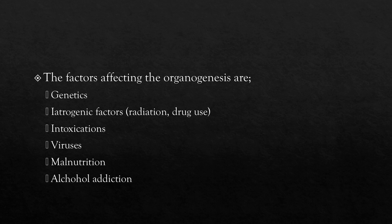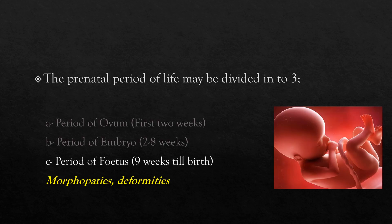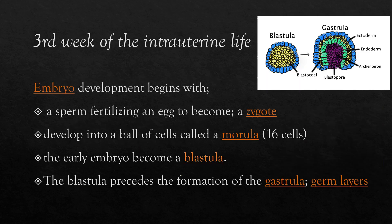The factors affecting organogenesis are genetics, iatrogenic factors, intoxications, viruses, malnutrition, and alcohol addiction. Following the formation of organ frames during organogenesis starts the morphogenesis phase. Disturbances during this period will result in morphopathies, also called deformities. Embryo development begins with the sperm fertilizing an egg to become a zygote, which undergoes many cleavages to develop into a ball of cells called a morula. The early embryo becomes a blastula that precedes the formation of the gastrula, in which the germ layers are present.